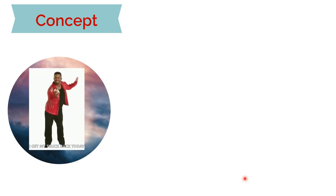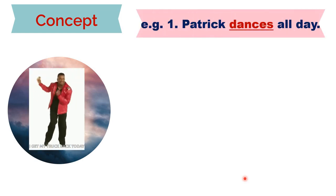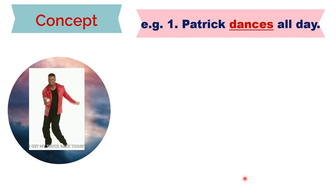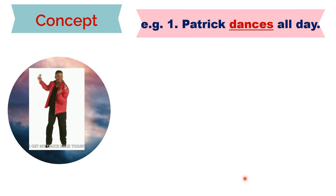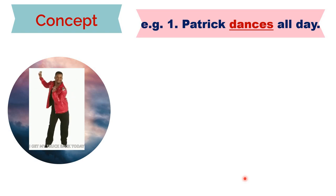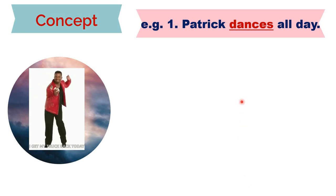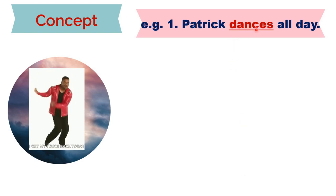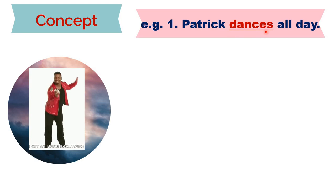First, we shall see the concept of verbs. We are making a sentence on Patrick: 'Patrick dances all day.' The highlighted word 'dances' is indicating the action performed by Patrick - this is an action performed by Patrick.